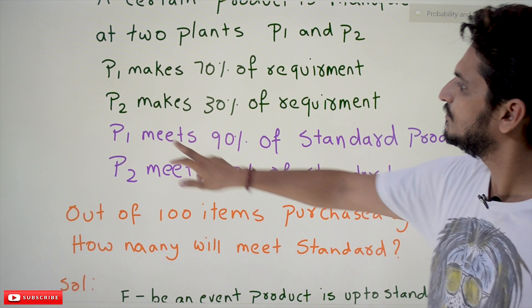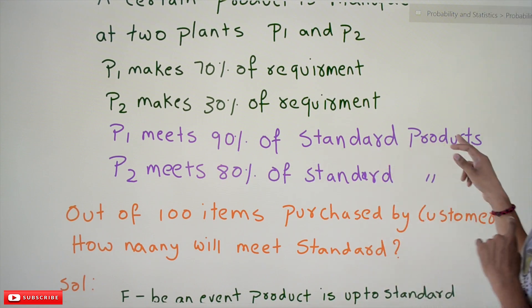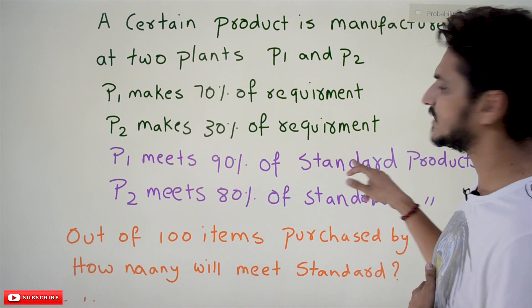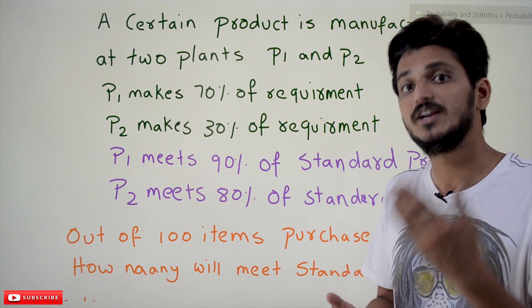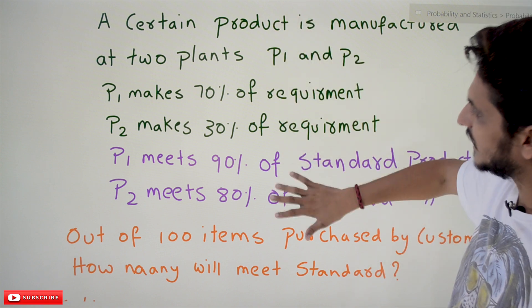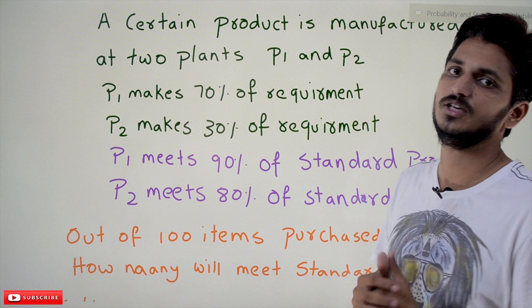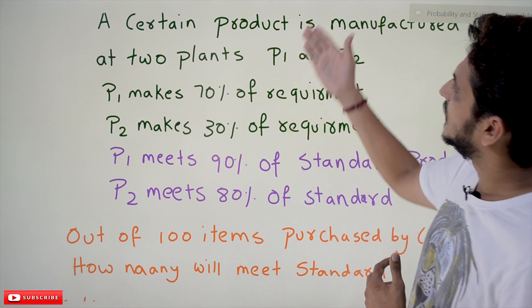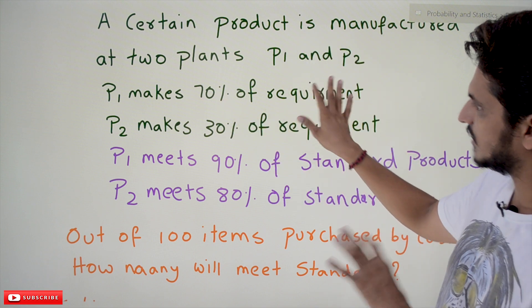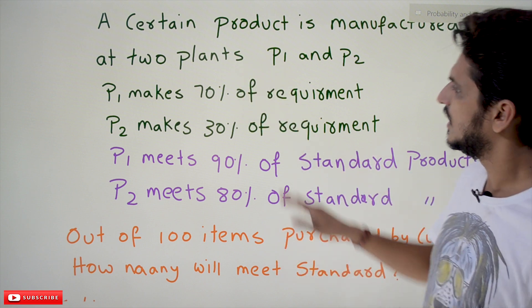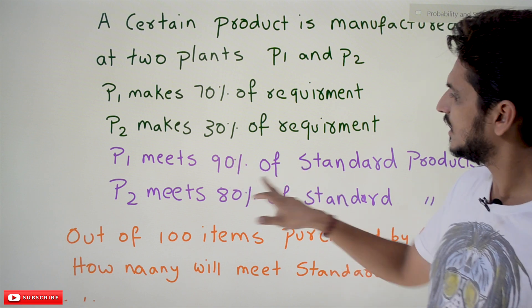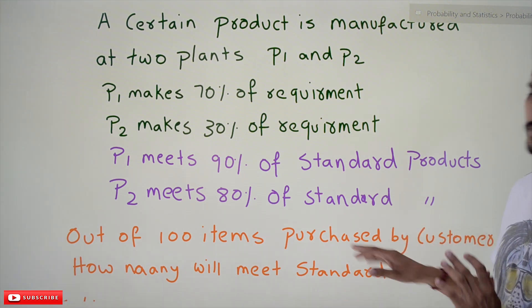It is also given that P1 meets 90 percent of the standard — meaning out of 100 products made by P1, 90 percent are standard (good) products and 10 percent are defective. P2 meets 80 percent of standard products. So P1 contributes 70 percent to the market with 90 percent quality, and P2 contributes 30 percent to the market with 80 percent quality.